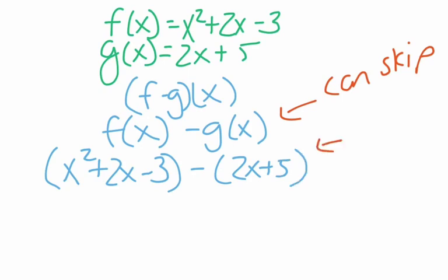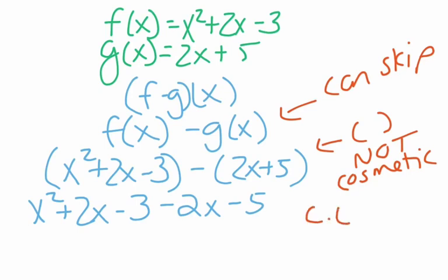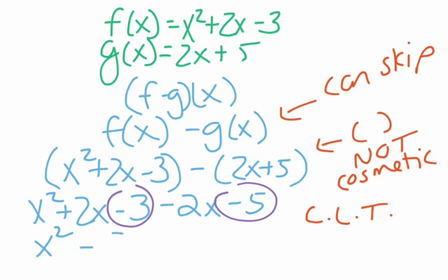The parentheses are not cosmetic here — they are not just for visual separation. Because you are subtracting the g of x, you actually need to remember that you're subtracting the entire thing. It's exactly the same as when we did complex numbers. When you remove the parentheses, you will need to subtract everything inside. Then, as before, you are combining like terms. We have x squared; 2x minus 2x causes the linear term to drop out; and negative 3 minus 5 is negative 8. So the answer is x squared minus 8.